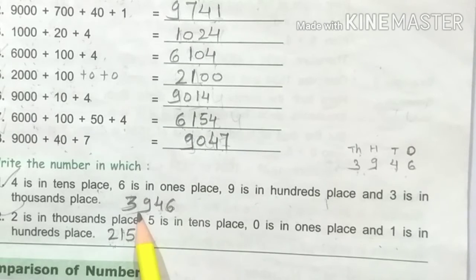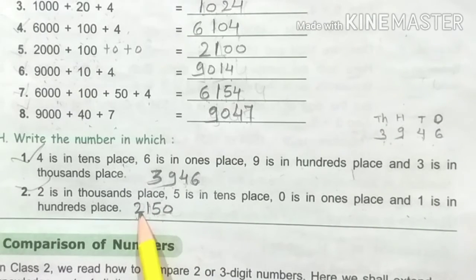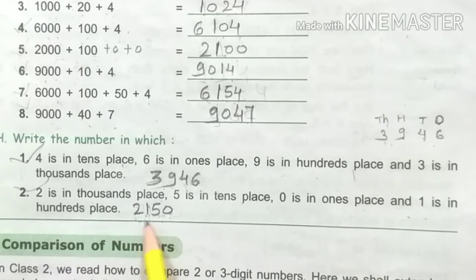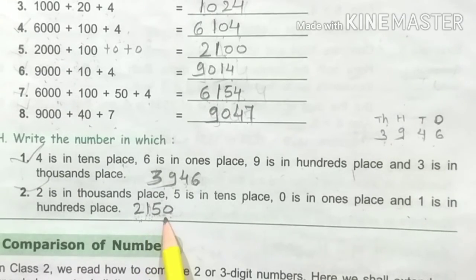Now next, the answer is 3946. Next: 2 is in thousands place, 5 is in tens place, 0 is in ones place, and 1 is in hundreds place. We get 2150.